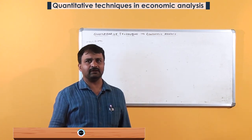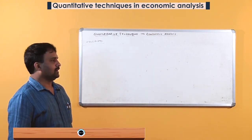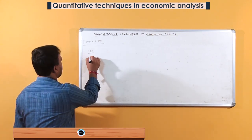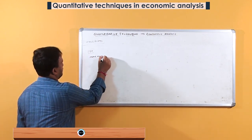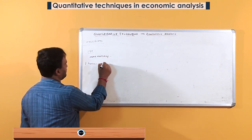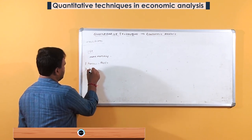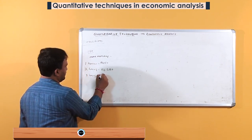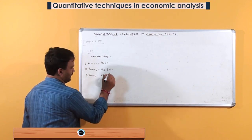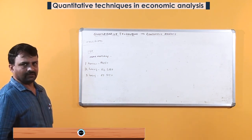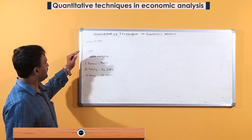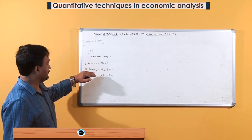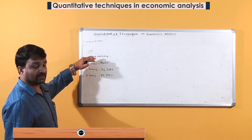For example, a man works in the evening and gets 150 rupees per hour. If he works one hour he gets 150 rupees; two hours, 300 rupees; three hours, 450 rupees. We can observe that income is highly dependent on the number of hours worked — when working hours increase, income also increases.